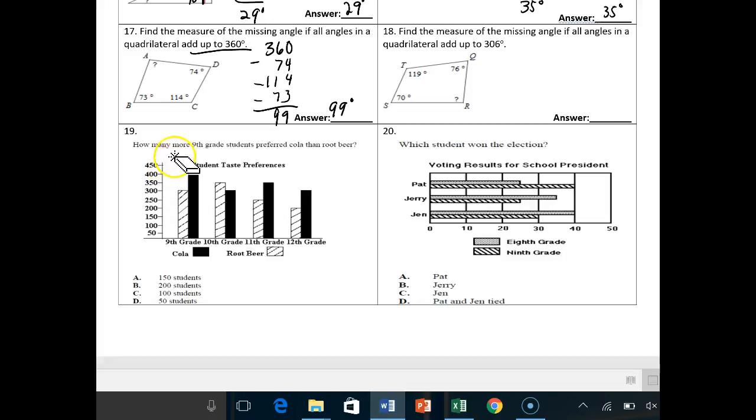Lastly, 19. How many more ninth grade students preferred cola than root beer? Dark is cola, striped is root beer. We go to the ninth grade. Cola for the ninth grade was 400, and root beer was 300. So how many more is subtraction? We have 100 more students, answer C. You're responsible for 20. Call me if you have questions. We'll see you next time. Bye-bye.